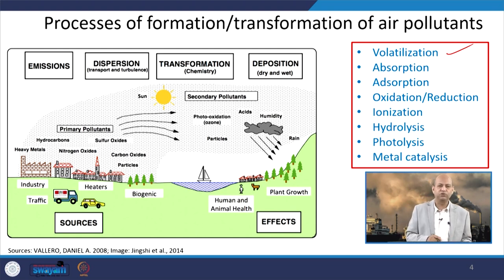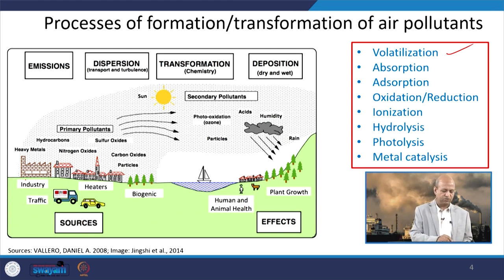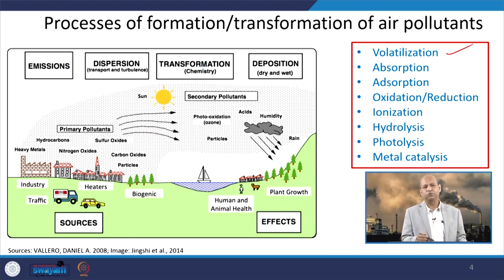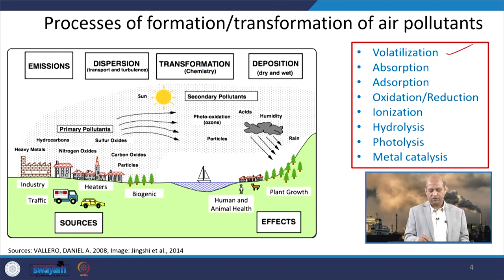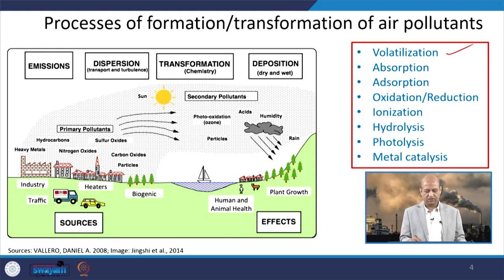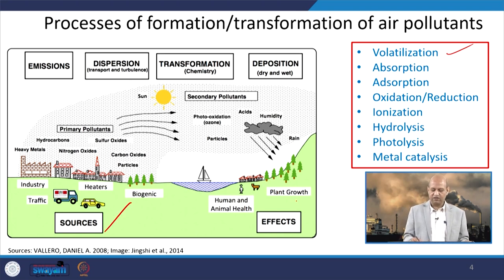You can see in this pictorial representation — a very nice representation from the source to the receptor — like heavy metals from factories or hydrocarbons, these are the primary pollutants. They get converted into secondary pollutants because of chemical reactions. Photo-oxidation happens, ozone is produced, acidic formation may be there, humidity plays a role, rain happens, then they become part of rain water, and all those water bodies get affected. So the source and the receptor where this effect is visible.